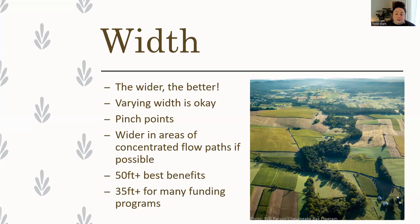Studies say that at least a 50-foot-wide buffer produces the best benefits, and up to 100 feet has increasing benefits. Beyond that the benefits don't necessarily increase, but with most funding opportunities in Pennsylvania you can plant out to 300 feet. Many funding programs, if you are seeking outside funding for your buffer, do require a minimum of a 35-foot width — some programs require 35 feet everywhere, while others allow an average of 35 feet. So take that into consideration when seeking funding, as constraints on width might impact the funding programs you are eligible for.